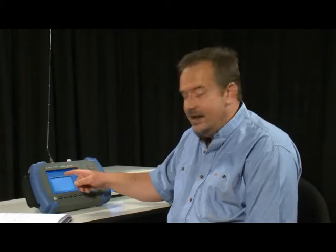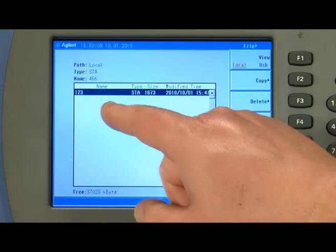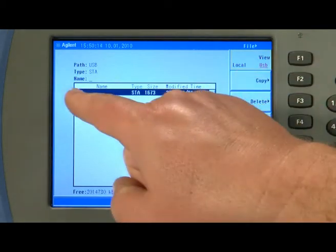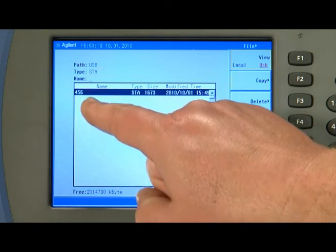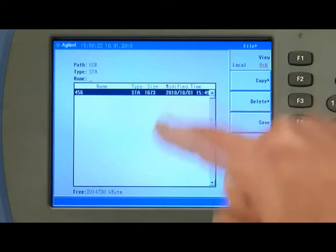Now the reason you cannot see that file saved on this display here is because the path for the display is still set to local. So let's view the USB stick and here you can see on the USB stick it says the path is USB and we have a file called 456. It is a state saved again on the 1st of October 2010.